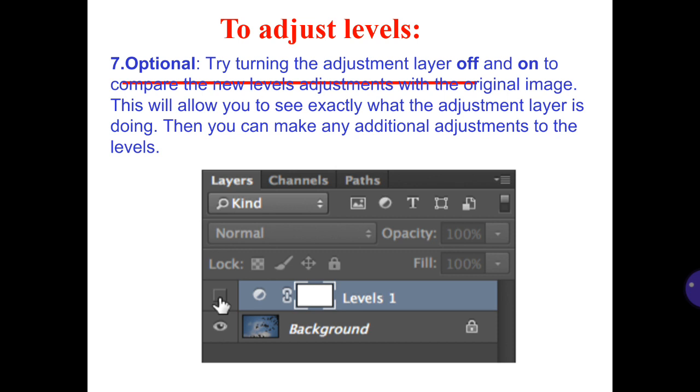7. Optional: Try turning the adjustment layer off and on to compare the new levels adjustments with the original image. This will allow you to see exactly what the adjustment layer is doing, and you can make any additional adjustments to the levels as needed. You can see the example in the pictures.